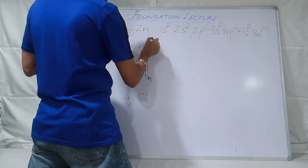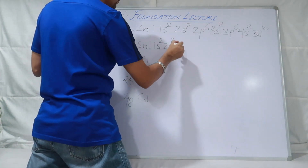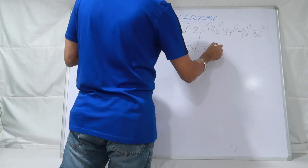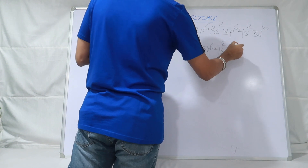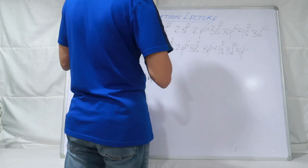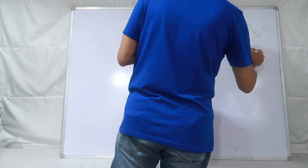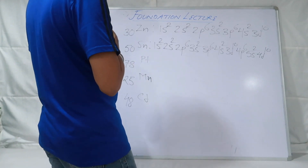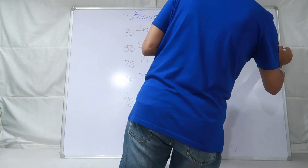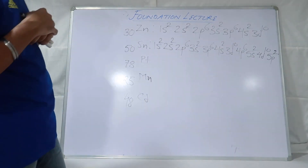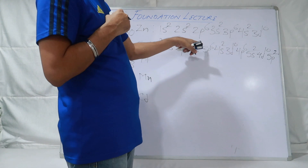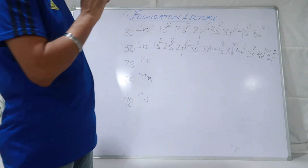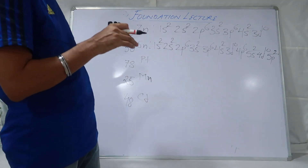Ab 50 Tin pe jaate hain: 1s2, 2s2, 2p6, 3s2, 3p6, 4s2, 3d10, 4p6 — kitna ho gaya? 36. 5s2, 4d10, 5p2 — 50 ho gaya. Count kar lo: 2+2+6+2+6+2+10+6+2+10+2 = 50. 5p2 pe stop ho gaya. Yes — that is the correct electronic configuration of Tin.